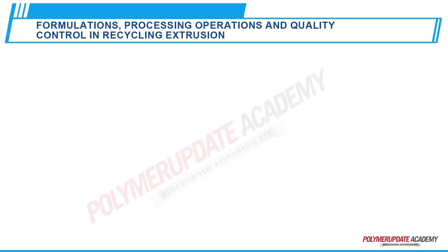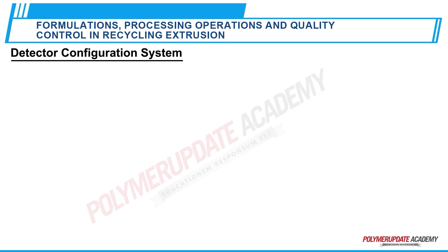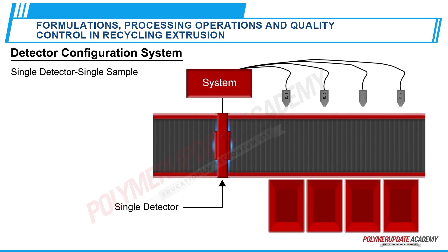Let us look at an animation to understand the detector configuration systems for sorting of plastic waste. The first of the three detector configuration systems is a single detector single container system, which is the simplest system for all singulated containers.